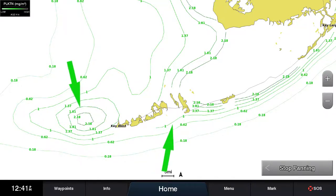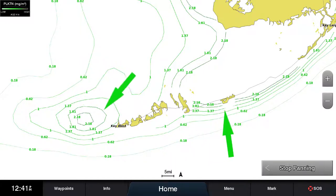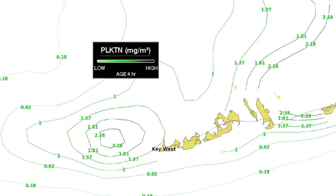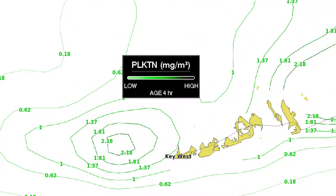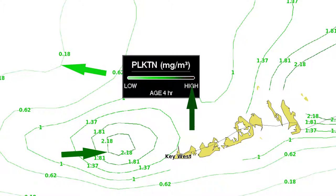Plankton concentrations show contour lines with the amount of plankton in a given area measured in milligrams per cubic meter. If you look at the legend, you will also notice that the areas with less amounts of plankton are shaded in light green, and the areas with greater amounts of plankton concentration are shaded in darker green.